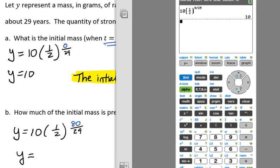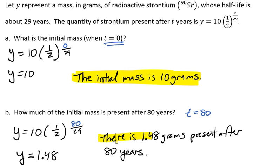We're going to bring up our calculator, and I'm going to use that same thing, except this time instead of a 0 there, I want to have an 80. So 80 divided by 29, and it tells us 1.47765. We'll round that to two decimal places and make that 1.48 grams. So there is 1.48 grams present after 80 years.